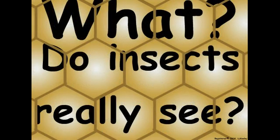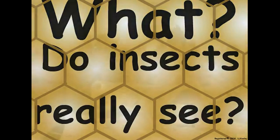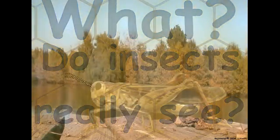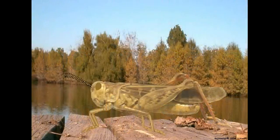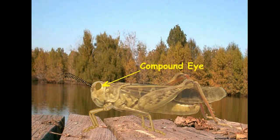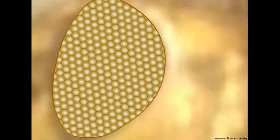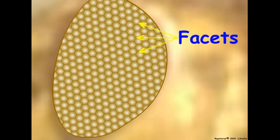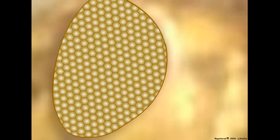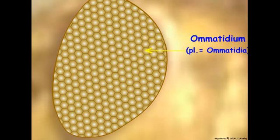Let us examine the structure of the insect compound eye and learn how the compound eyes visualize the landscape for insects. The main visual structure of insects is the compound eye, which appears to be comprised of many hundreds or thousands of tiny facets. Each facet is actually the corneal lens for an individual photoreceptor unit called an ommatidium.